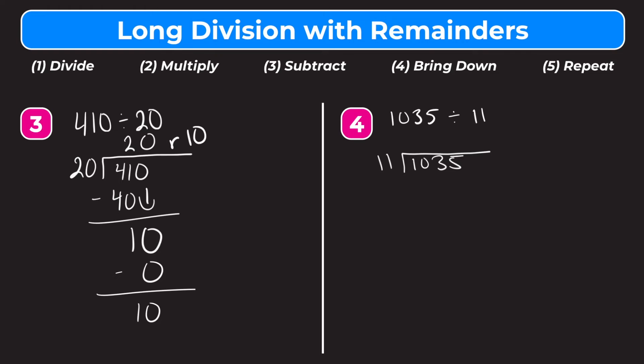Some of you might know this off the top of your head, but if not, we can estimate using easy multiples of 11. A good starting point is 10: 11 times 10 is 110 — that's a little too big. So let's drop it down one: 11 times 9 is 99. Since 10 is too big and 9 works, 9 whole groups of 11 fit into 103. We write the 9 over the 3 since we used those digits. Step 2 is multiply: 9 times 11 is 99. Step 3 is subtract: 103 minus 99 gives us 4.